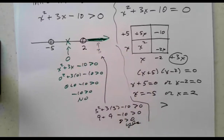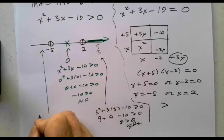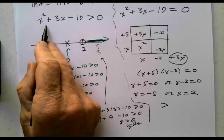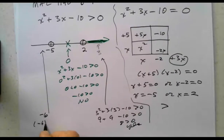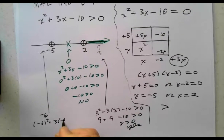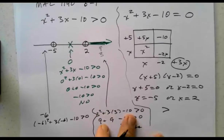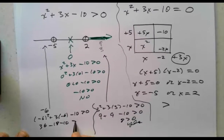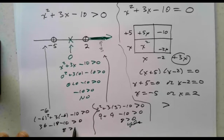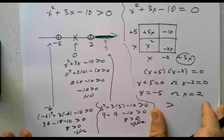Beyond negative 5, we could try negative 6. Plugging into x squared plus 3x minus 10: negative 6 squared plus 3 times negative 6 minus 10. That gives 36 minus 18 minus 10. Is 36 minus 18 minus 10 — which is 8 — greater than 0? Yes. So we're going to shade in that direction as well.